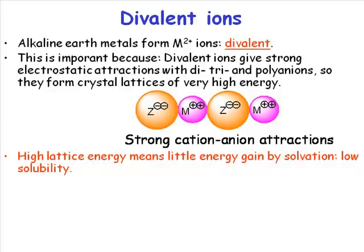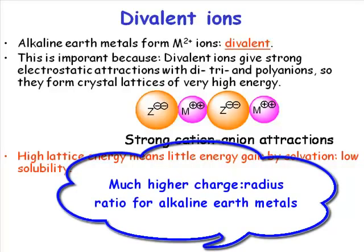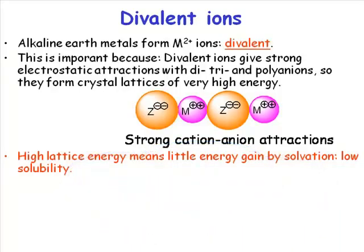And now we have a charge of two. The charge-to-radius ratio for the alkali metal ions was quite low, but the charge-to-radius ratio for the alkaline earth metals is much higher, because they're that bit smaller in the same period and they've now got two-plus charge. What that translates into is very strong inter-ionic interactions — the Coulombic forces between these ions are very, very strong. That means the lattice energies are very, very high, and if the lattice energies are very high, you have very high melting points for the salts.